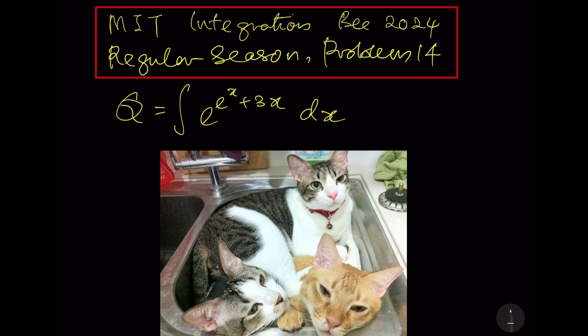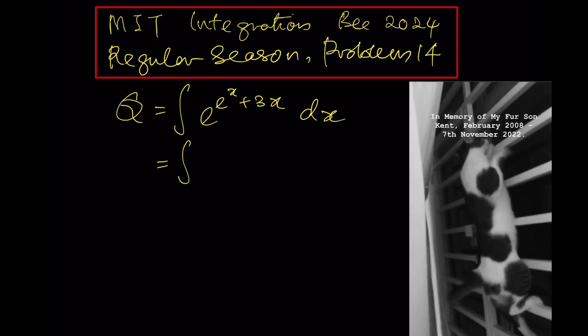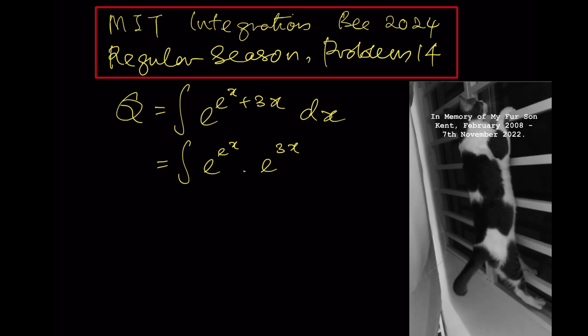Hello ladies and gentlemen, welcome to my video. Today we will solve another easy yet fun question from the regular season MIT Integration Bee 2024. First step: rewrite the integrand of the question to become e^(e^x) multiply e^(3x).